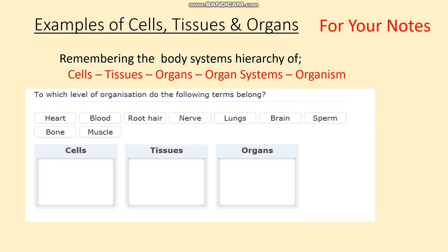Hopefully you've done that. Can you now put the title 'Examples of Cells, Tissues and Organs' in your notes? I'd like you to draw up a table with three column headings: cells, tissues and organs — remembering the hierarchy here, small going to large.